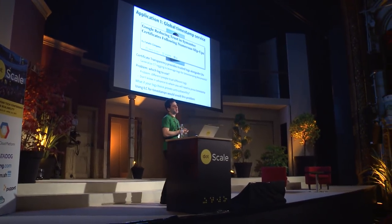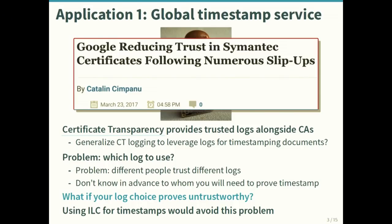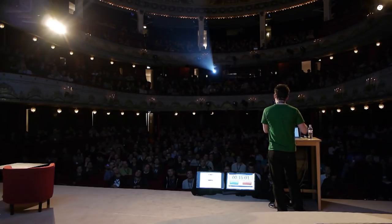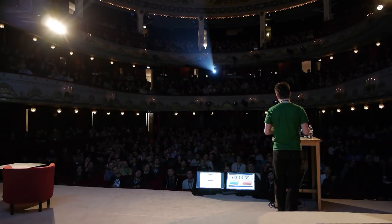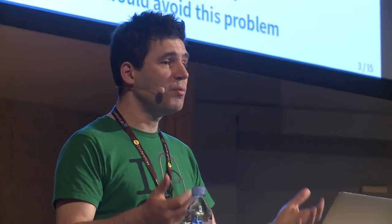Another problem is: what if you pick a reasonable-seeming log authority and then in retrospect people decide that organization wasn't trustworthy? This happened — Google decided Symantec had done some bad things in the context of certificate authorities. You can fix that for going-forward web connections, but if you need to prove history it's much harder. On the other hand, if we had internet-level consensus, all log authorities in the world would have agreed that your document appeared at a particular time, so you could prove it to anyone.